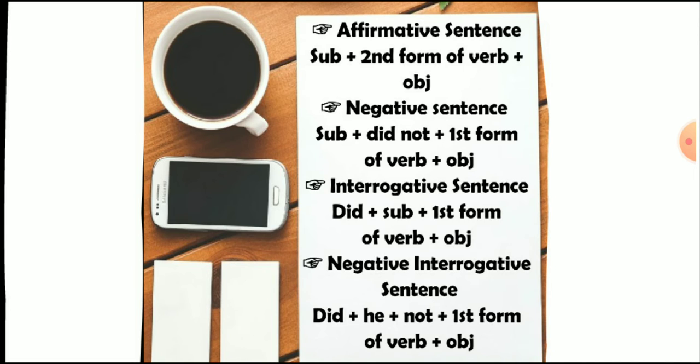For the interrogative sentence, we use the helping verb 'did' at the start of the sentence, plus subject, plus first form of verb, plus object. For the negative interrogative, we use: did plus subject plus not plus first form of verb plus object.